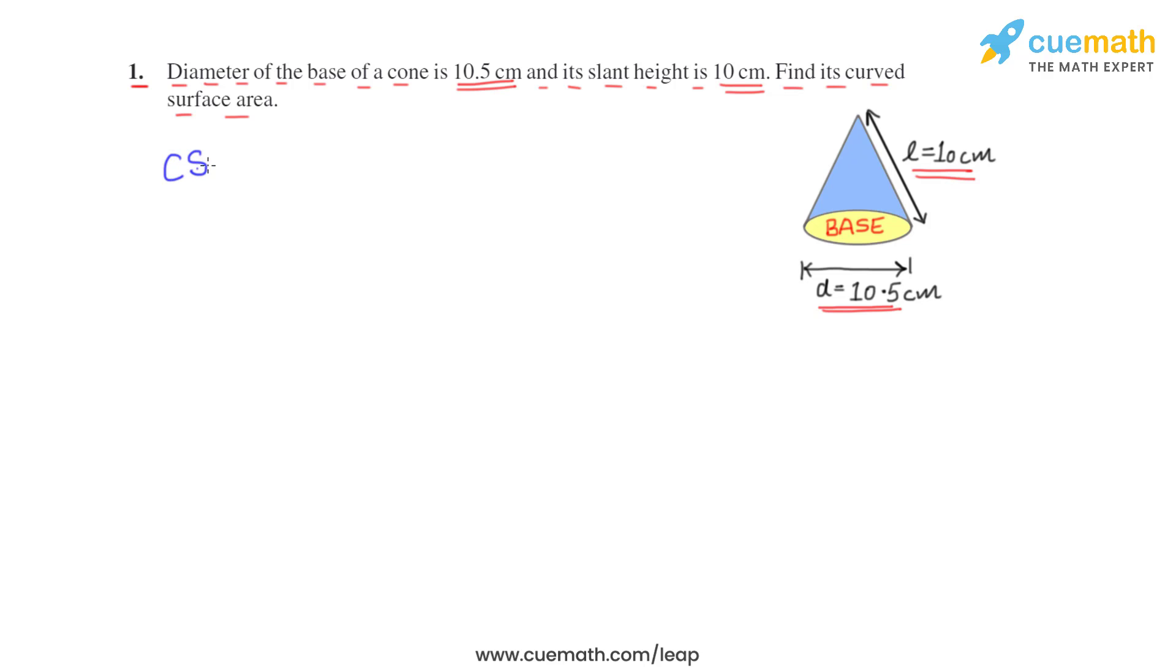So curved surface area of a cone, the formula is π × r × l, that is π into radius of base into slant height.